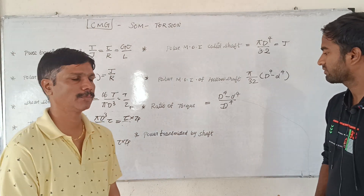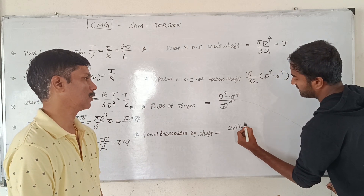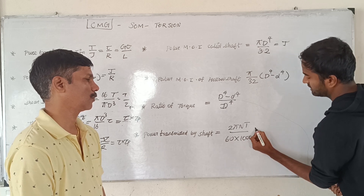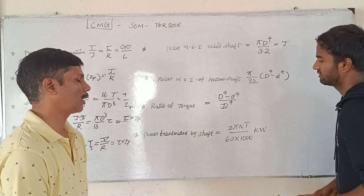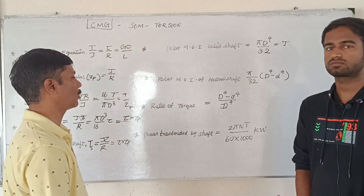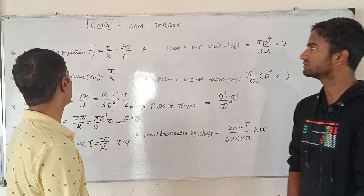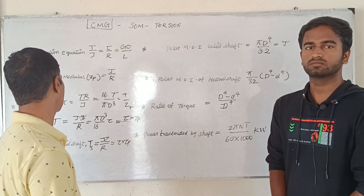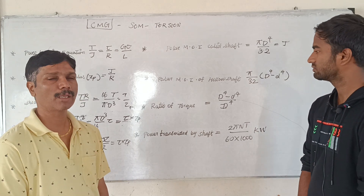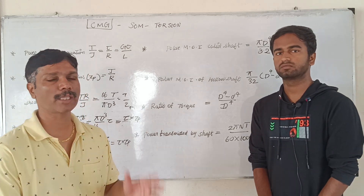Power transfer by shaft: 2·Pi·N·T by 60 into 1000 kW. We covered torsion equation, polar section modulus, torque, and polar moment of inertia for solid and hollow shafts. Thank you so much.